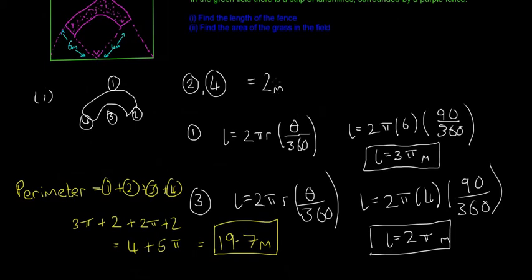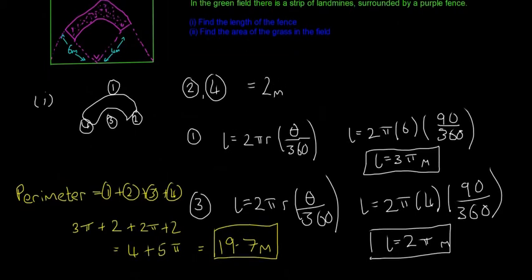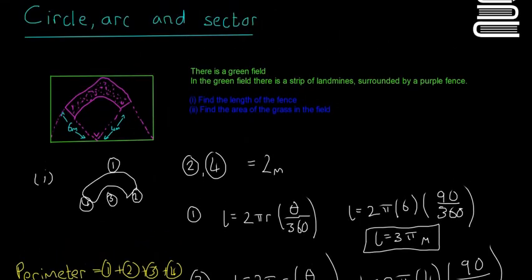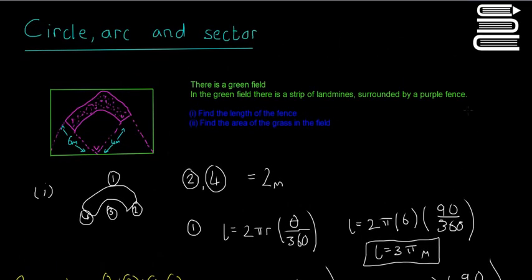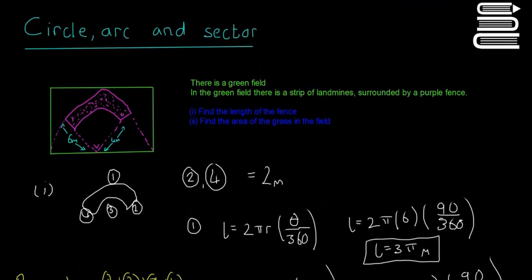Now we need to find the area of the grass in the field. We can't directly find that area because it's not a standard shape. What we can do is find the area of the entire field, then subtract the area of the landmine strip, and we'll be left with the grass area.